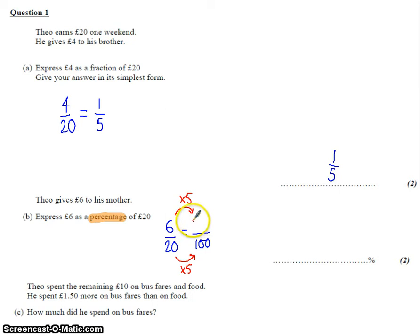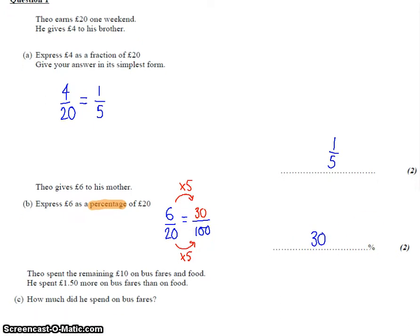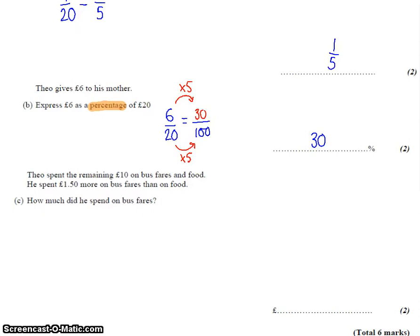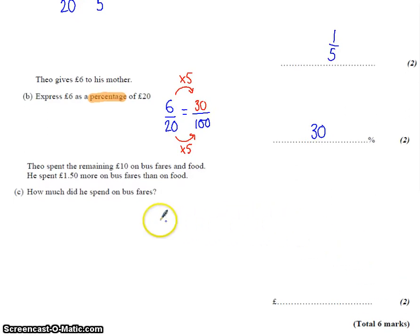That means that it must be 6 times 5, which is obviously 30. So as a percentage, 30%. Now, that's four marks so far.